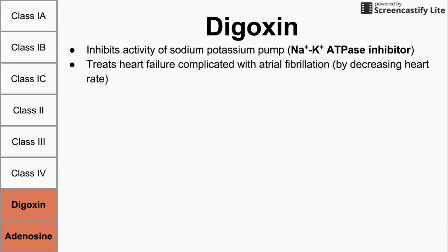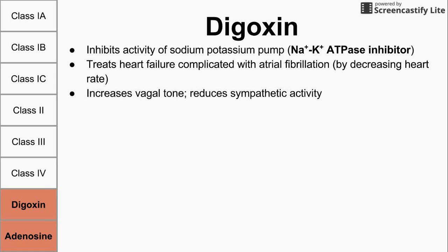Two more antiarrhythmic drugs are worth mentioning. First, digoxin specifically blocks the sodium-potassium pump. It can be used to treat heart failure complicated with atrial fibrillation. Its effects include increasing parasympathetic activation of the heart — resulting in a decrease in heart rate, an increase in vagal tone, and a reduction in sympathetic activity — all achieved by blocking the sodium-potassium pump.